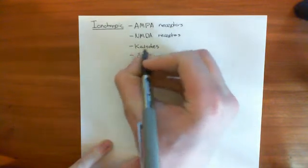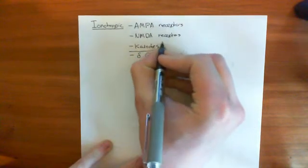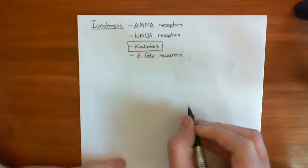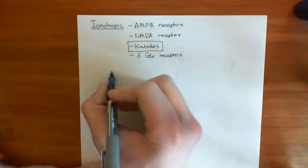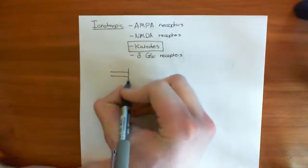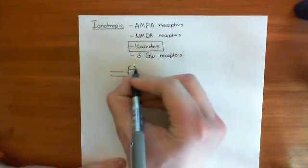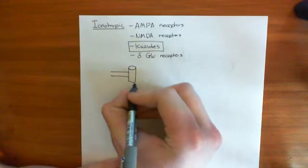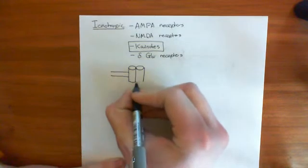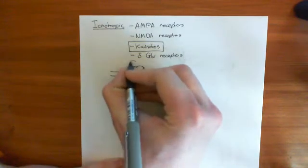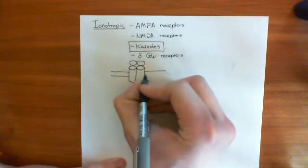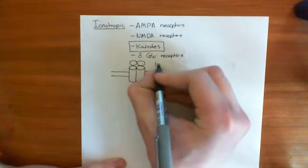In this video, we're going to concentrate on the kainate receptors. They have a very similar structure to the AMPA receptors. If I draw one in a cell membrane here — so here is the phospholipid bilayer — it's a four-subunit structure, made out of four subunits. There are many genes coding for these subunits. Here is a kainate receptor sitting in the membrane, made up of four subunits.